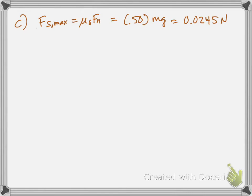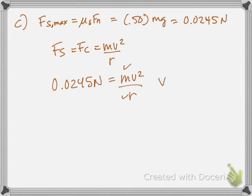Now remember, friction is acting as a centripetal force. So that's equal to mv squared over r. So all I have to do is substitute this Fs max for mv squared over r. We're given m, we're given r. So we get a velocity of 0.83 meters per second. That's the maximum speed that this can spin and still provide enough friction.